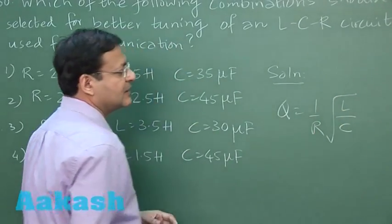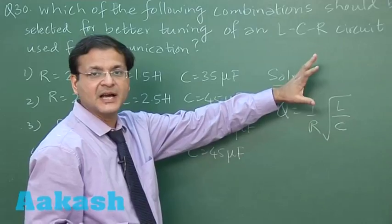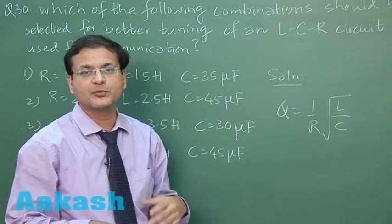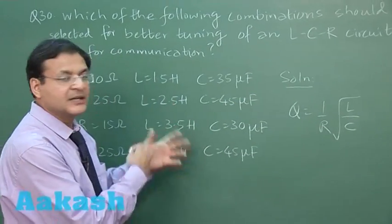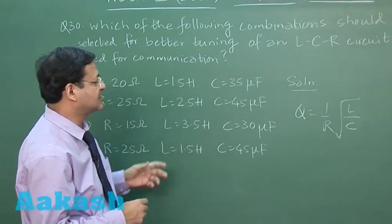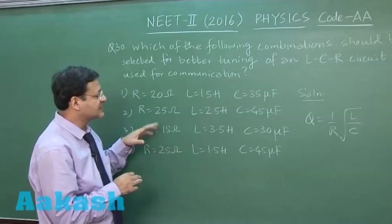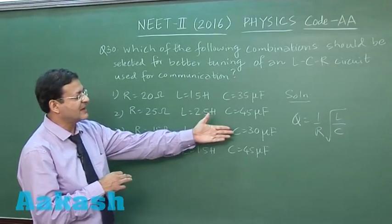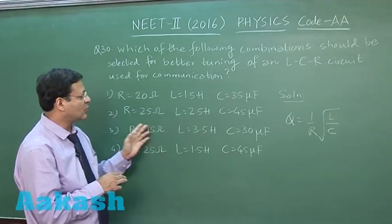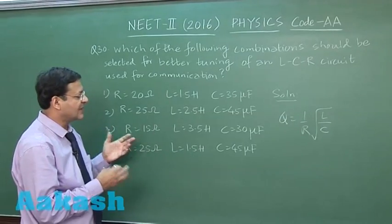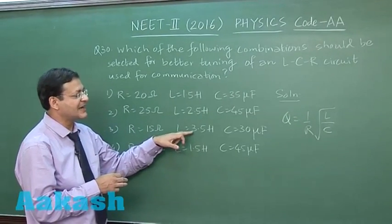The quality factor expression is (1/R)√(L/C). For better quality, inductance value should be as high as possible and resistance and capacitance should be small. The value of resistance should be as low as possible, capacitance also as low as possible. The third option gives you that, and L should be as large as possible.